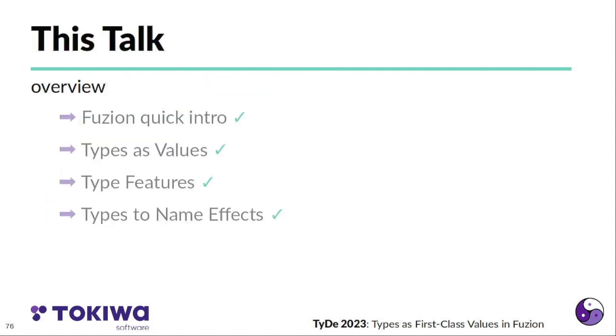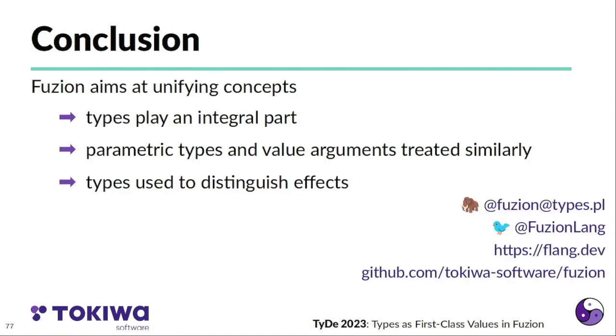That's it. I'm basically through. So to my conclusion, Fuzion, the language aims at unifying concepts. And I think I could show you that types play an integral part in that. One point is that parametric types and value arguments are treated very similarly in Fuzion. And types are used to name to distinguish effects. Thank you.